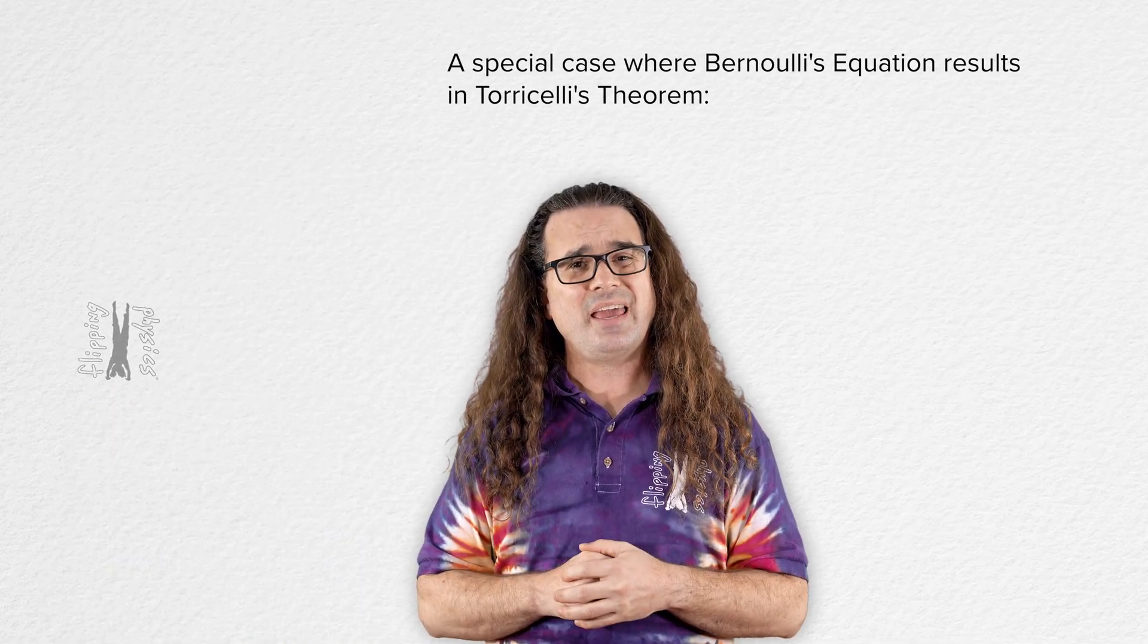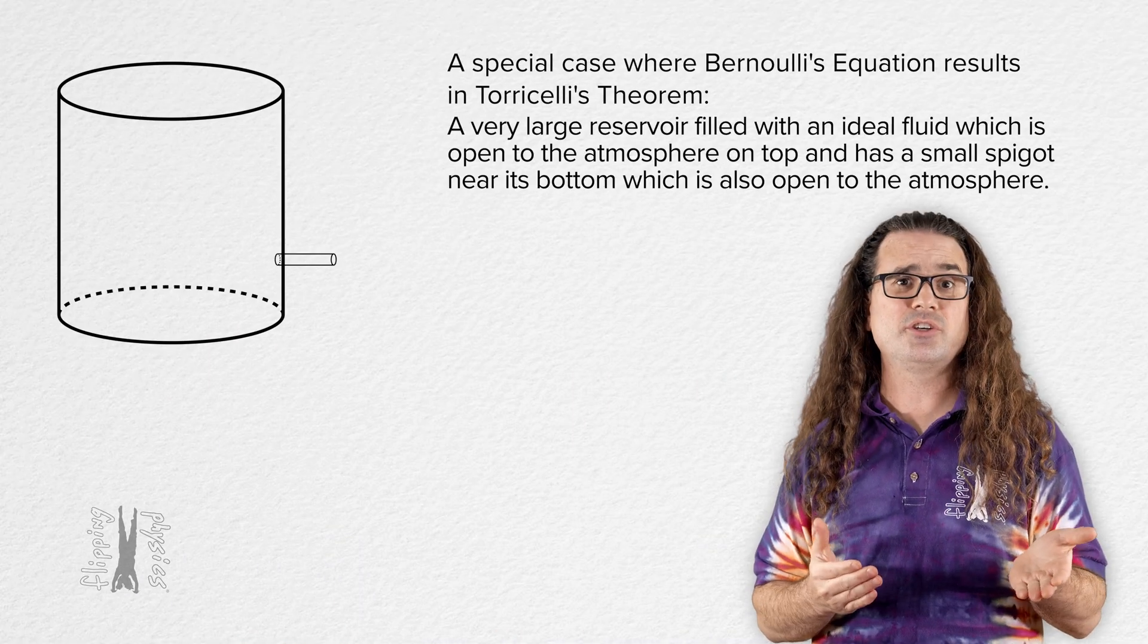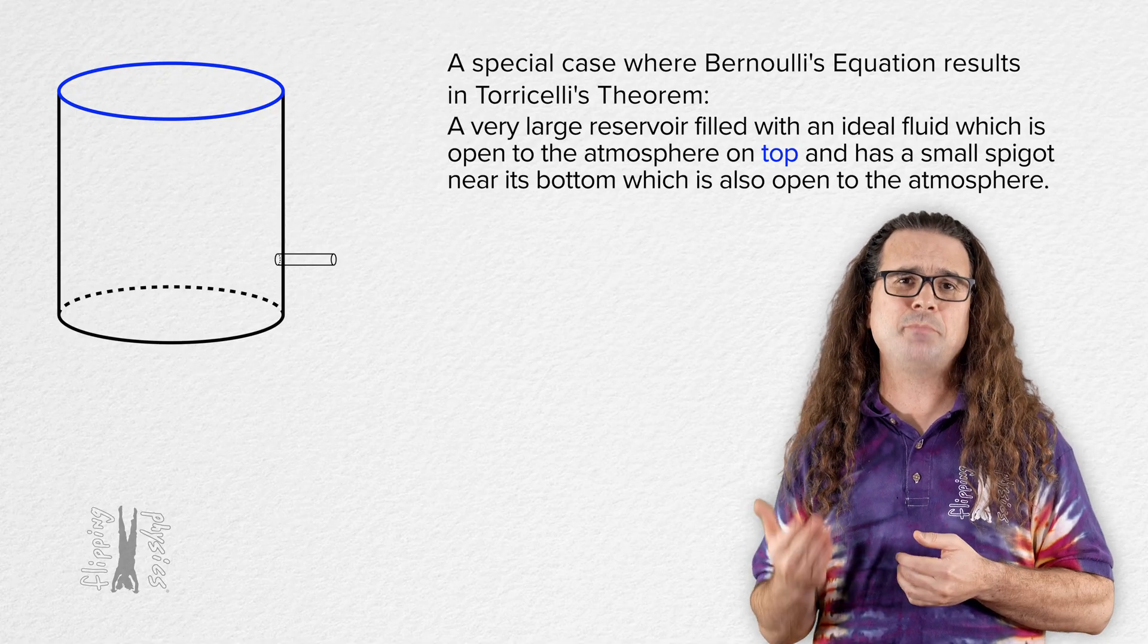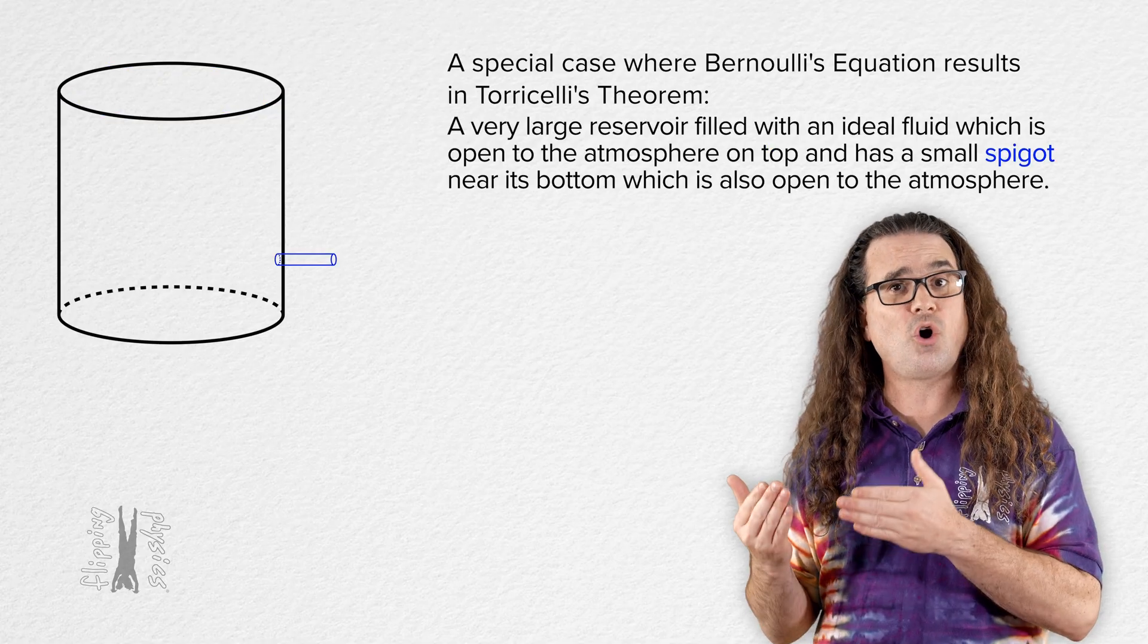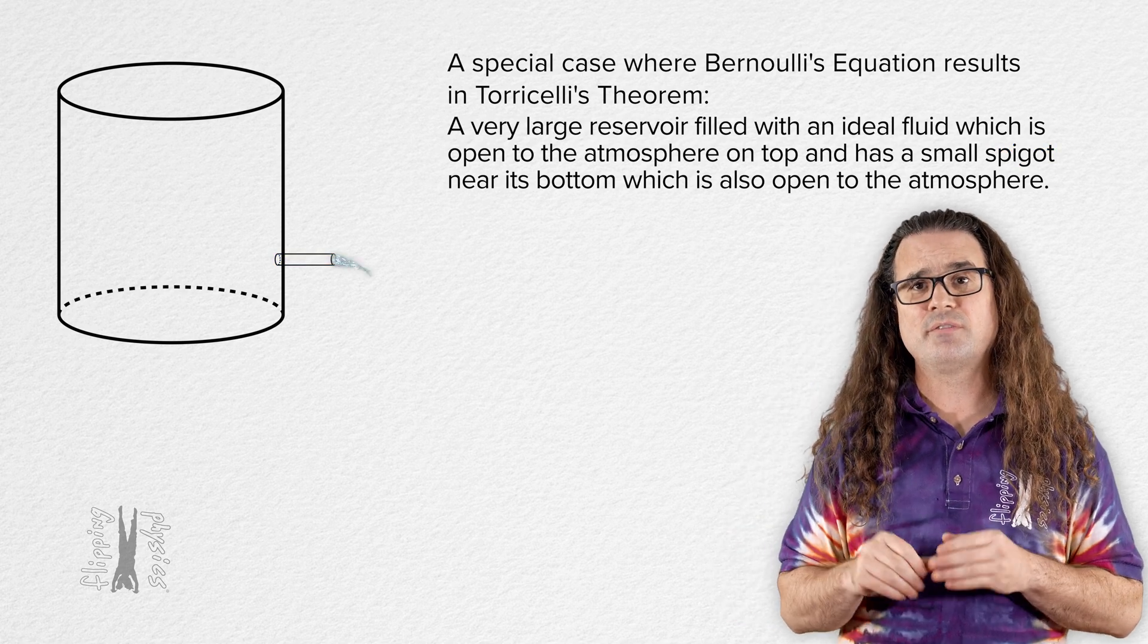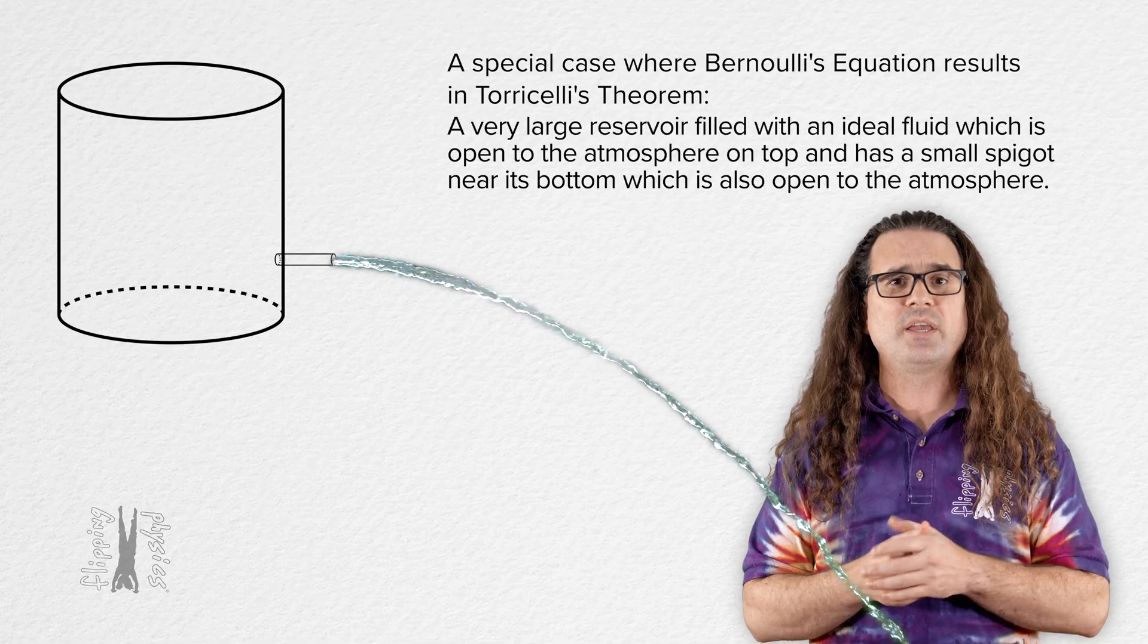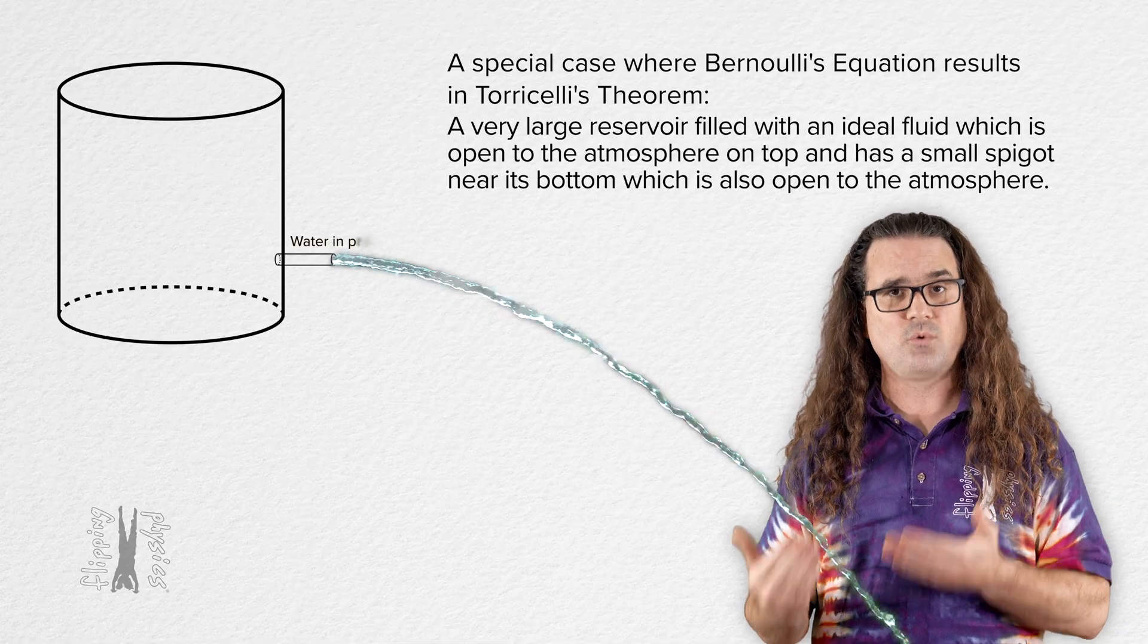The special case begins with a very large reservoir filled with an ideal fluid which is open to the atmosphere on top and has a small spigot near its bottom which is also open to the atmosphere. The equation which describes the speed of the fluid flowing out of the small spigot is Torricelli's theorem, which we can derive by starting with Bernoulli's equation.